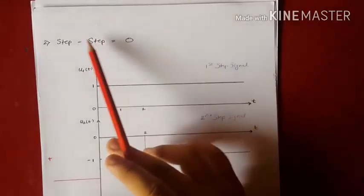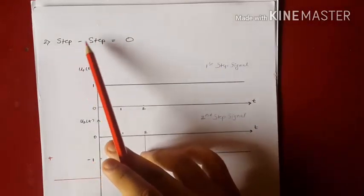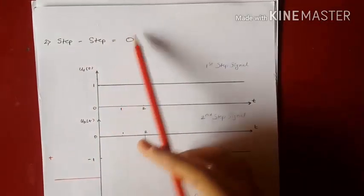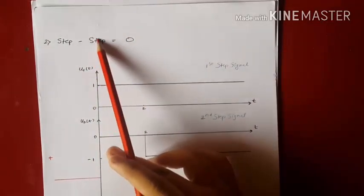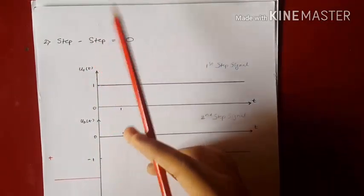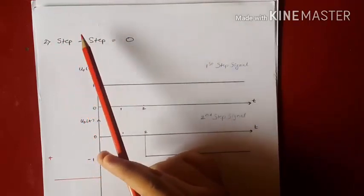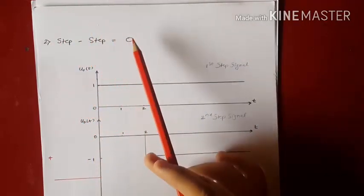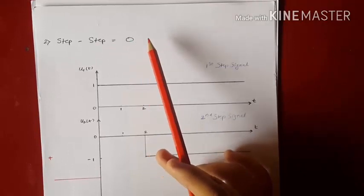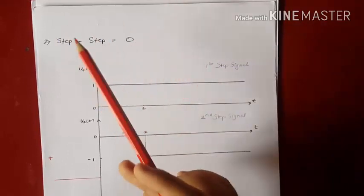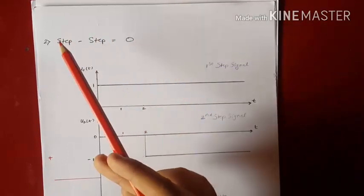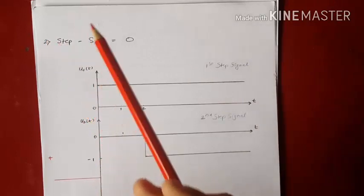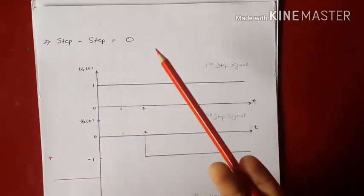The second trick says that step minus step will give 0. This means that subtracting a step from another step signal with the same amplitudes will result in no signal, or a zero signal. If the amplitudes are of different values, then they will be subtracted mathematically.